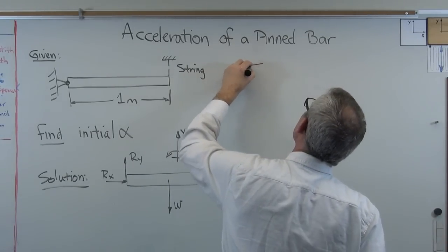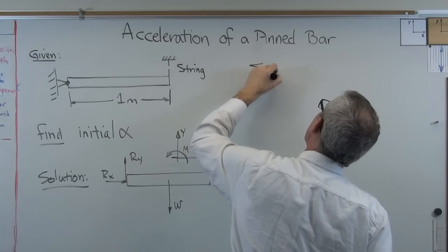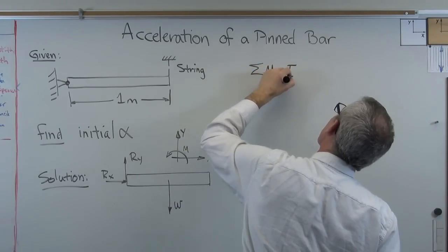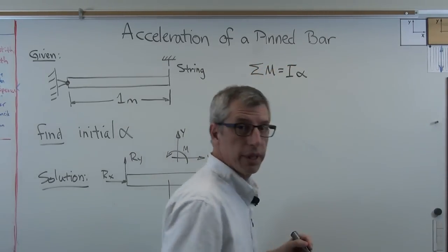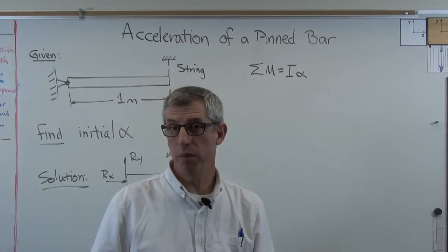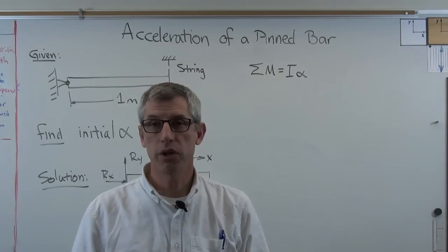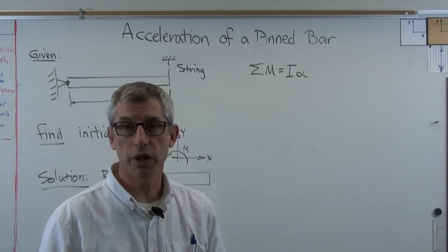Well, next thing to do is let's write down the governing equation. Now we know that f equals ma, well, sum of the moment equals I alpha. That's the rotational equivalent of f equals ma. If you want to think of mass as resistance to linear acceleration, I, the mass moment of inertia, is resistance to rotational acceleration. There's a number associated with that.